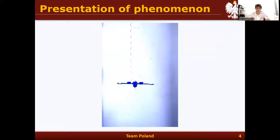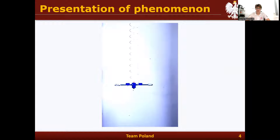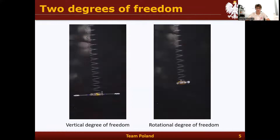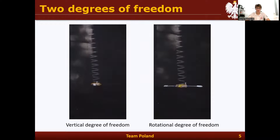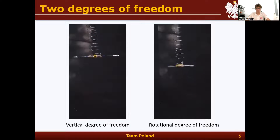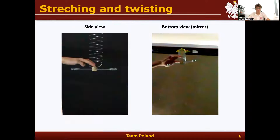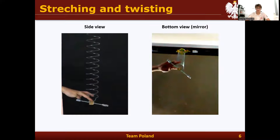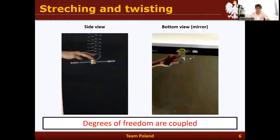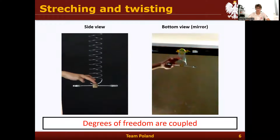On the phenomenon presentation, we can see how the Wilberforce pendulum moves up and down and rotates at the same time. Because of that, we can say that there are two degrees of freedom: a vertical one shown on the left and a rotational one shown on the right. Moreover, if we act with a vertical force on a helical spring, it doesn't only elongate but also rotates, leading to the conclusion that the degrees of freedom in our system are coupled.